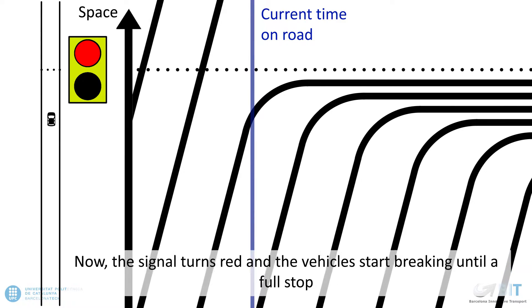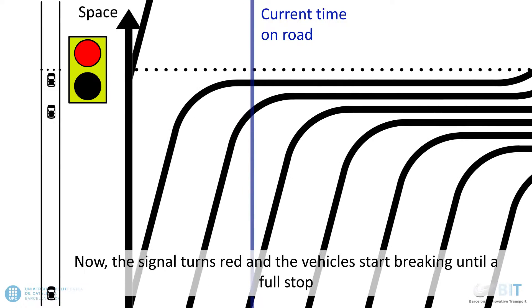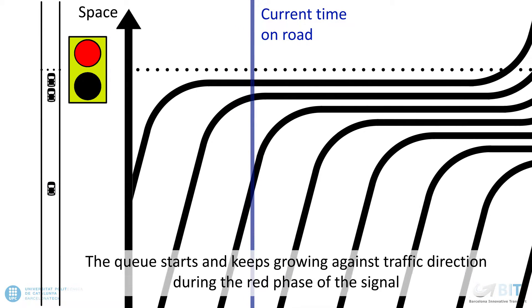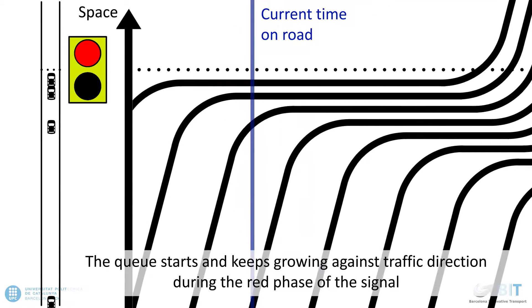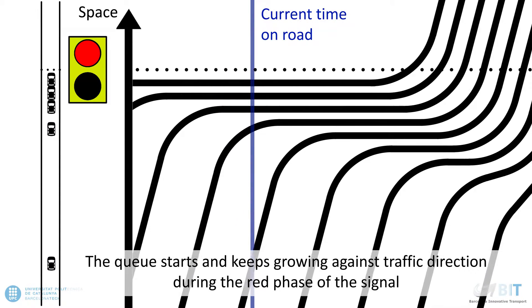Now the signal turns red and the vehicles start braking until a full stop. The queue starts and keeps growing against traffic direction during the red phase of the signal.